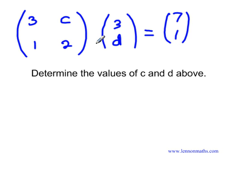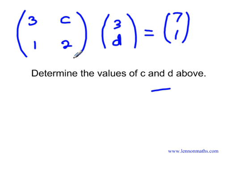When I'm finished working out C and D of the matrices, I'm going to plug the values of C and D into the matrices and then multiply them. I should get 7 and 1 as entries for the resultant matrix. As we do it, you will pick up. So let's go through that quickly.